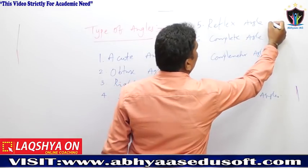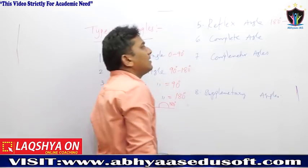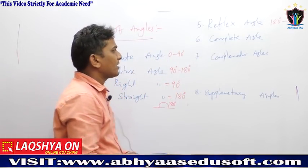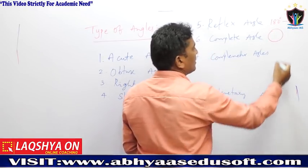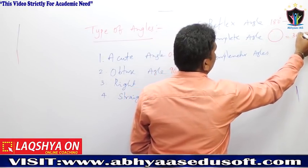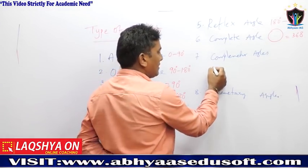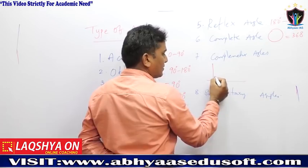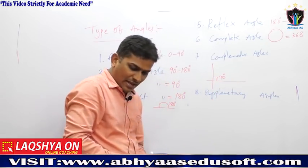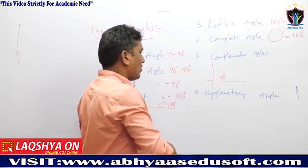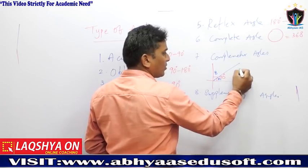A reflex angle is any angle in between 180 degrees to 360 degrees. A complete angle is when we cover a complete rotation, which equals 360 degrees. For complementary angles: if we have a 90-degree angle split into angle A and angle B, then A plus B equals 90 degrees.